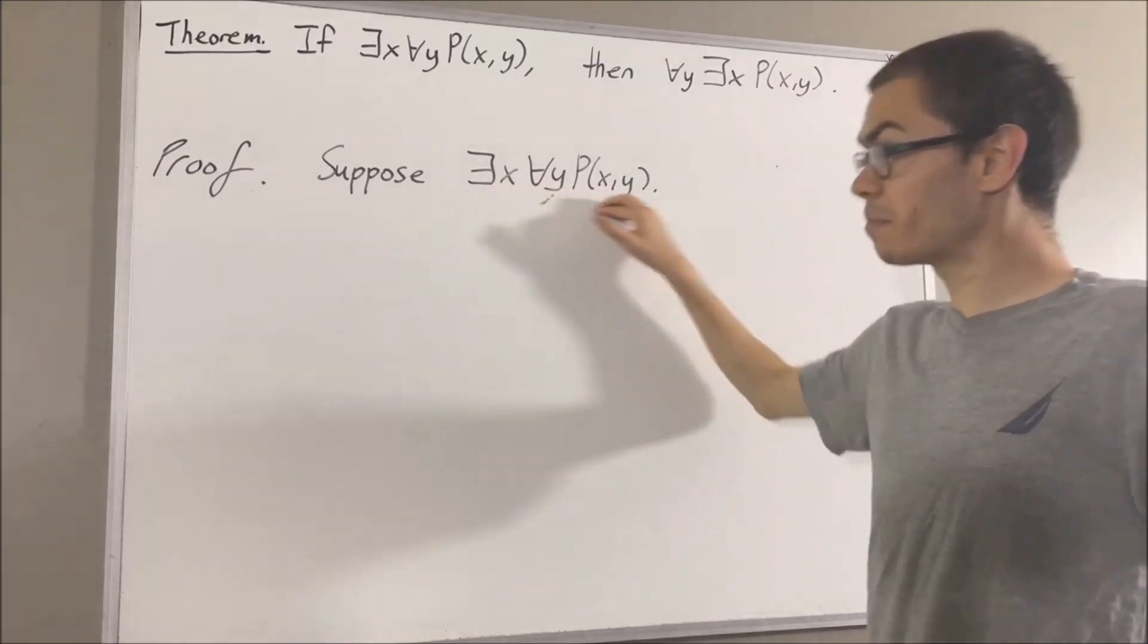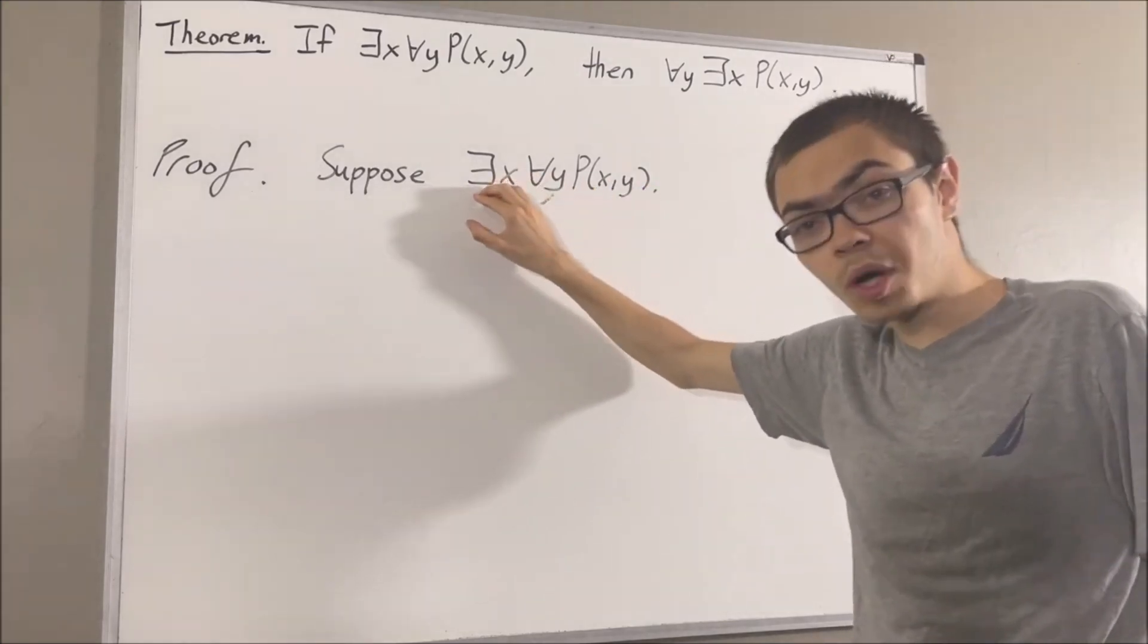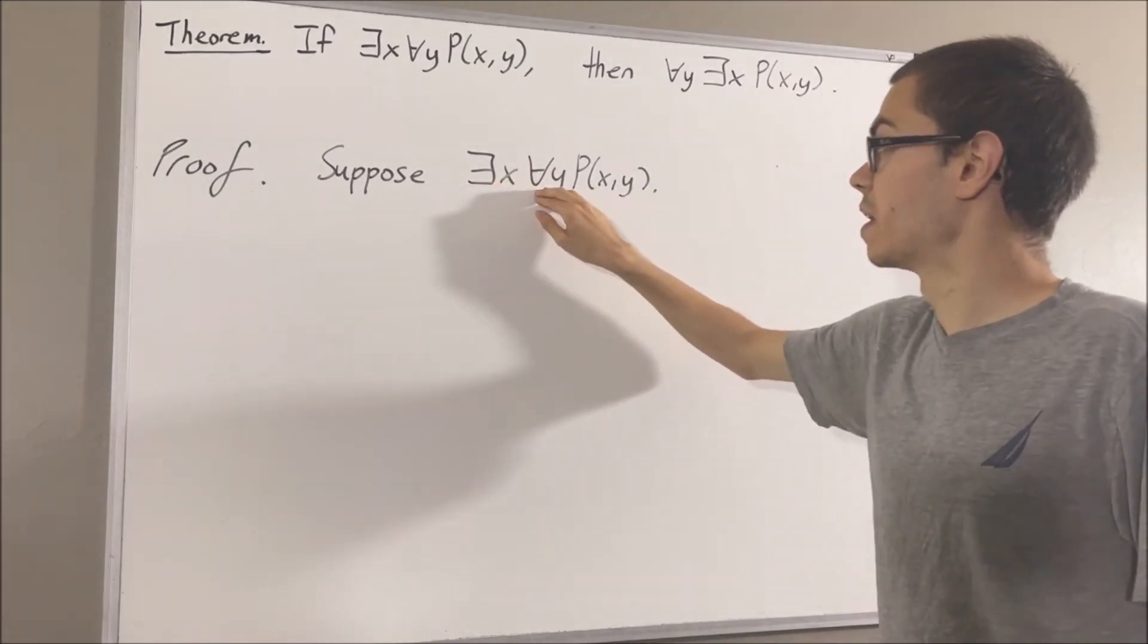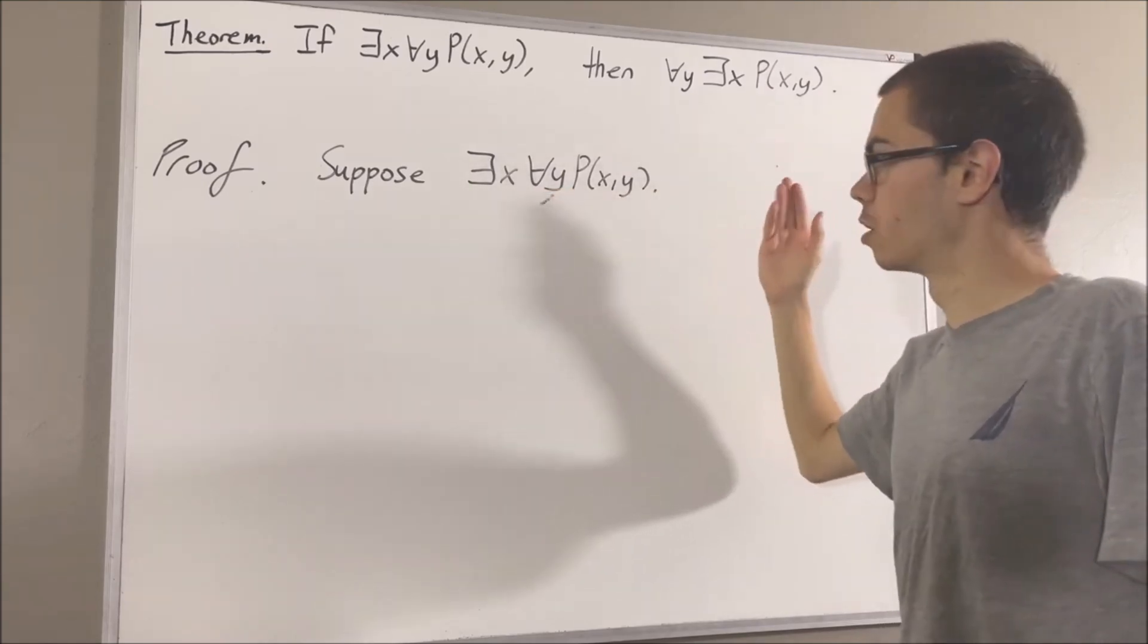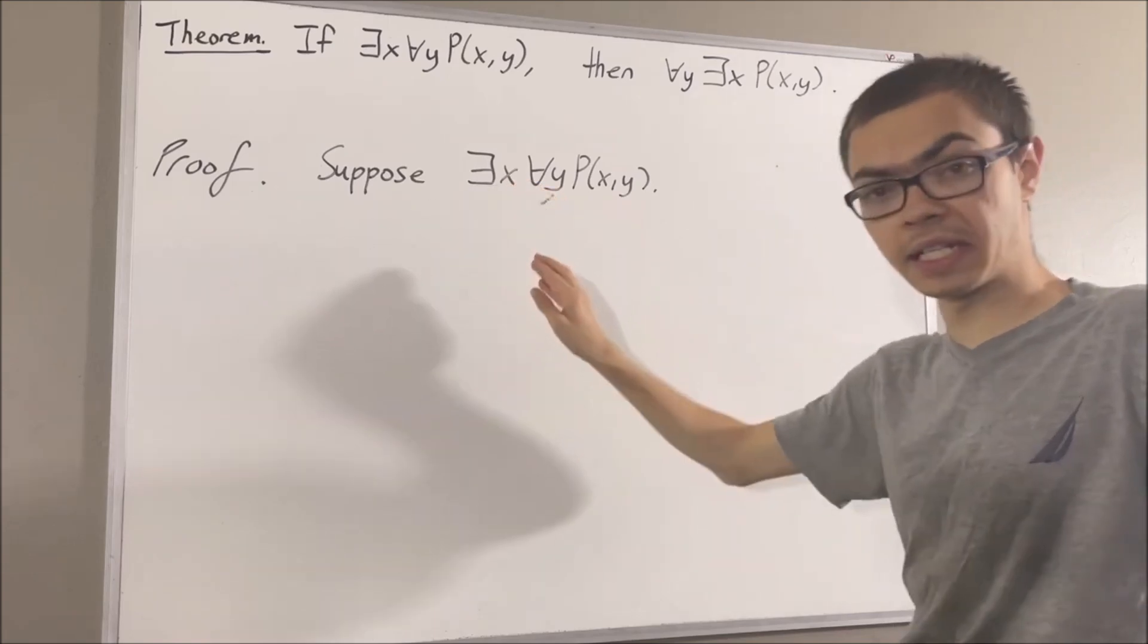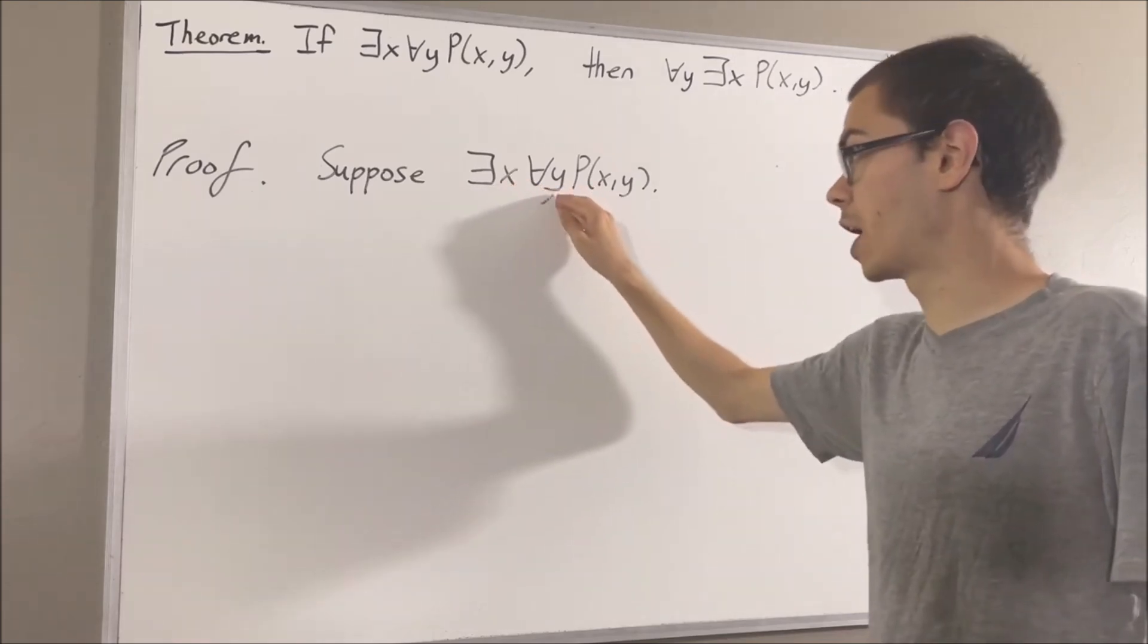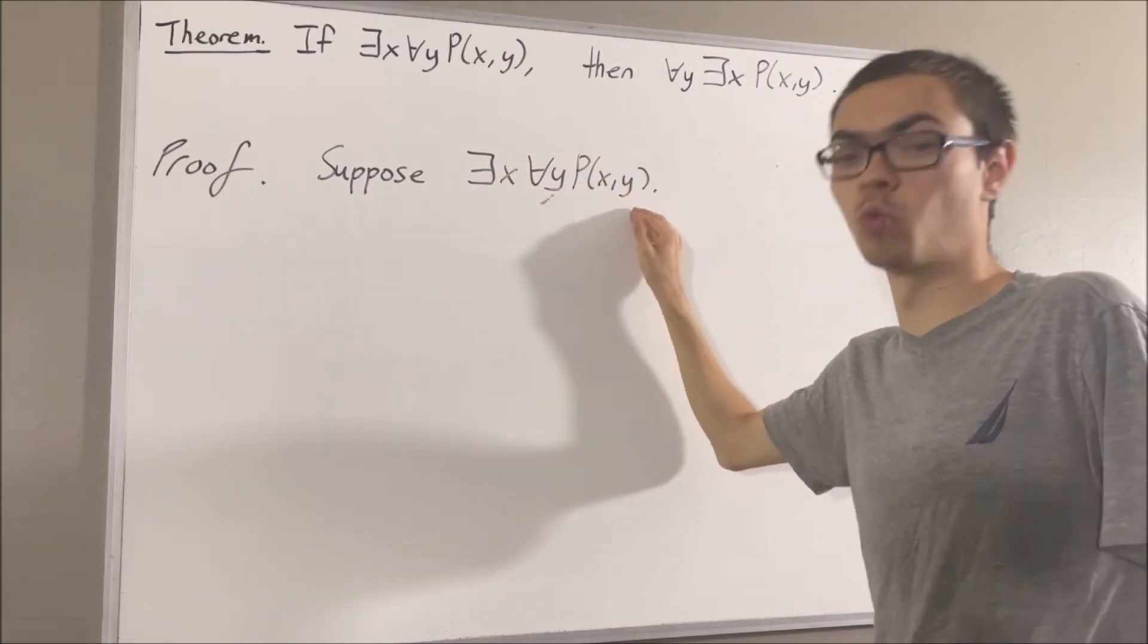Now to start, this means that there is at least one object which makes this statement true. We'll call that object c. So we're going to instantiate x to be c, and we have that for all y, P(c,y).